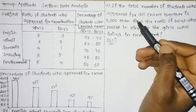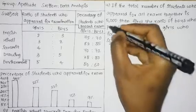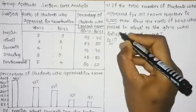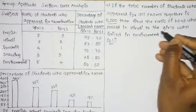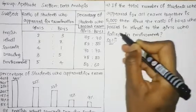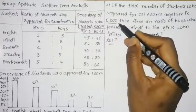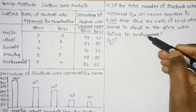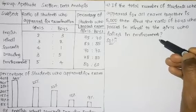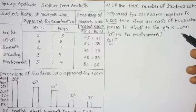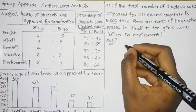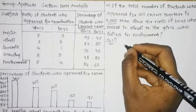The question is: if the total number of students who appeared for all the exams together is 5000, we need to find the ratio of boys who passed in Hindi to the girls who failed in environment. So first we need to find the number of boys who passed in Hindi, then the number of girls who failed in environment.